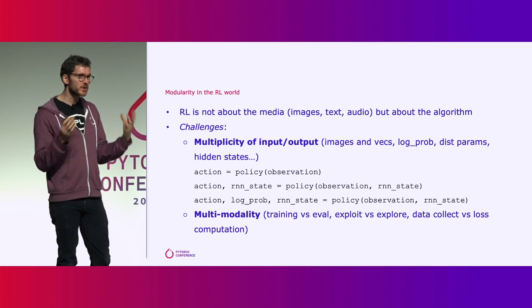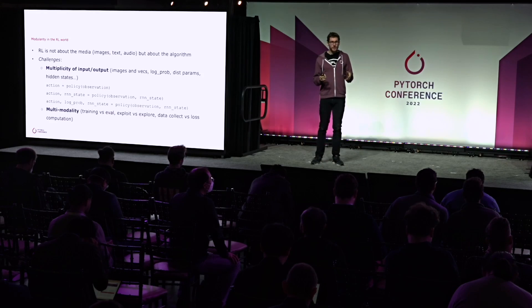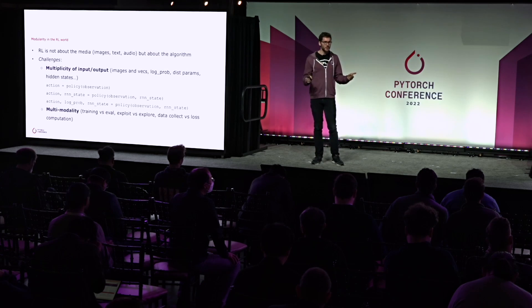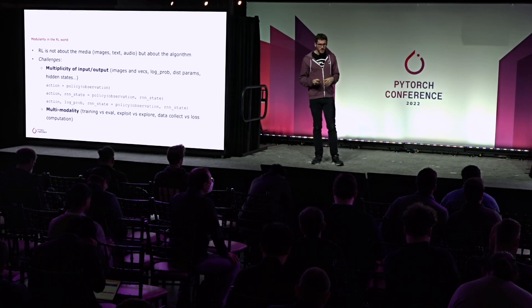It's very difficult to come up with a unified API because, for instance, a policy in RL usually reads an observation and outputs an action. But sometimes a policy is more complex — it reads an observation and a recurrent neural network state, and outputs an action and the next state. Sometimes a policy returns something other than just an action, like an action and its probability. So the policy can behave in very different ways across algorithms, and must also be multimodal: executing in training or evaluation mode, exploitation versus exploration, and so on.